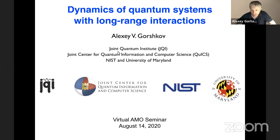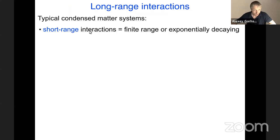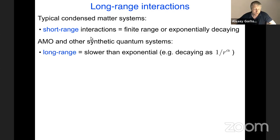I will talk about dynamics of quantum systems with long-range interactions. Because of screening, typical condensed matter systems are often well described by short-range interactions — either strictly finite range or decaying exponentially with distance. Many AMO and other synthetic quantum systems are instead well described by long-range interactions, which decay slower than an exponential. A prime example is interactions that decay with distance as 1/r^α.